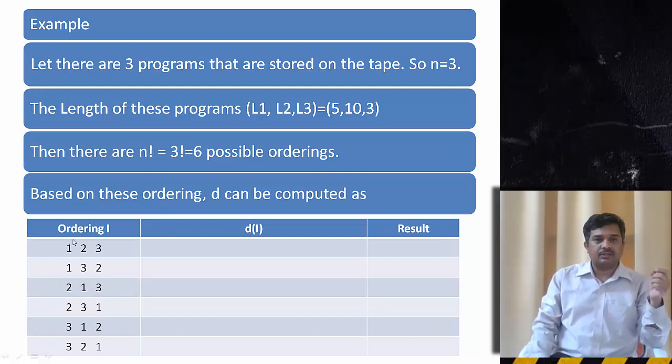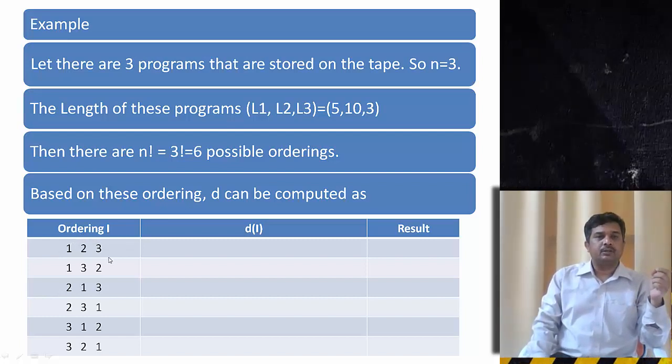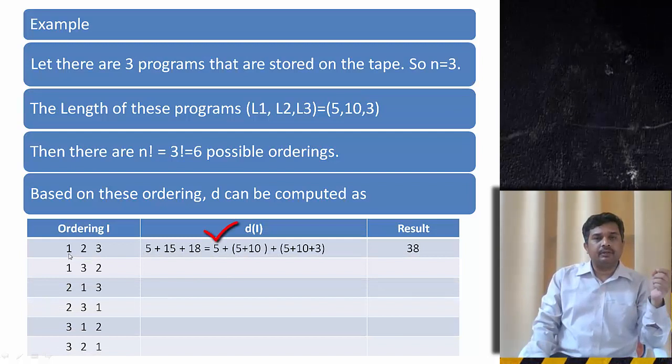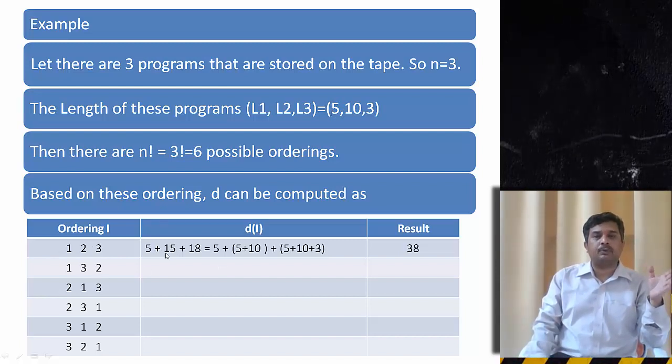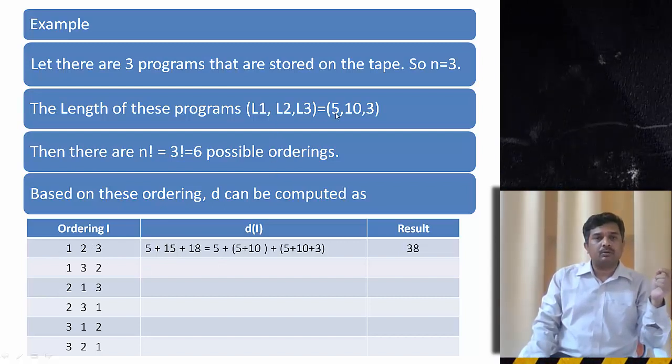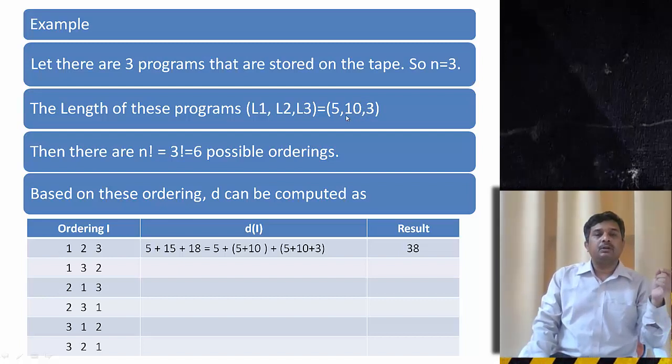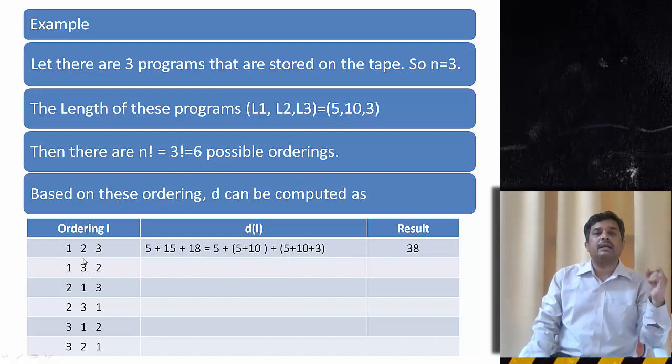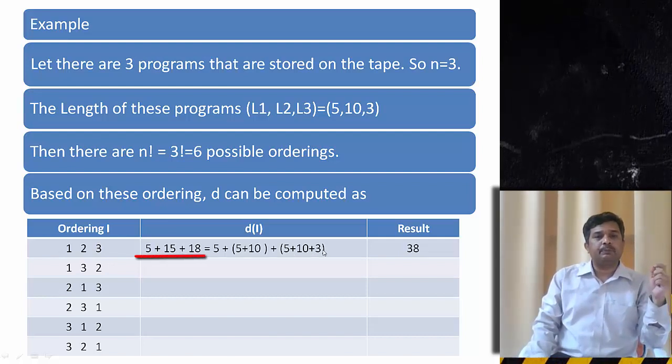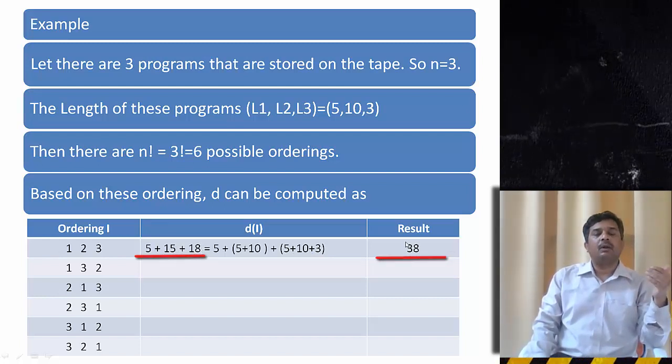Let us say I am taking the first program first. So the first program, if I am taking, the unit required is 5 units. For the second program it will take 15 units because it has to go through the first program as well as the second program. So all together it will take 15 units of time to retrieve the second program. To retrieve the third program, it has to retrieve the first program, second program, and third program, so it will take 18 units of time. So 5 plus 15 plus 18, it will give me 38 units of time to retrieve all my programs.